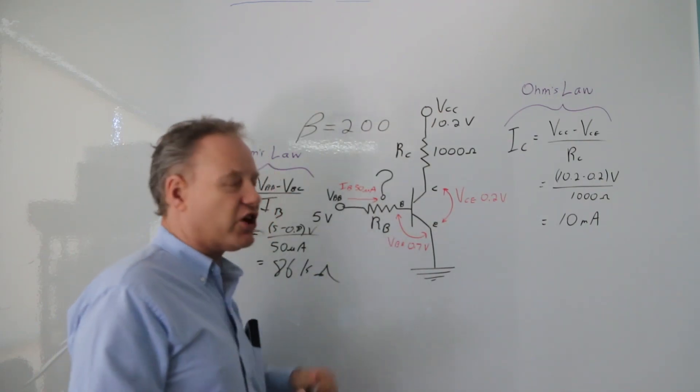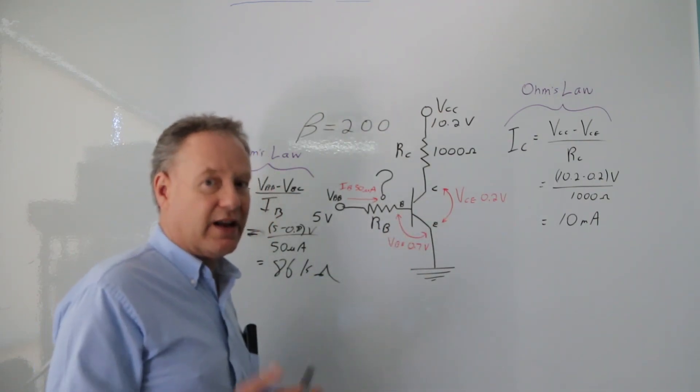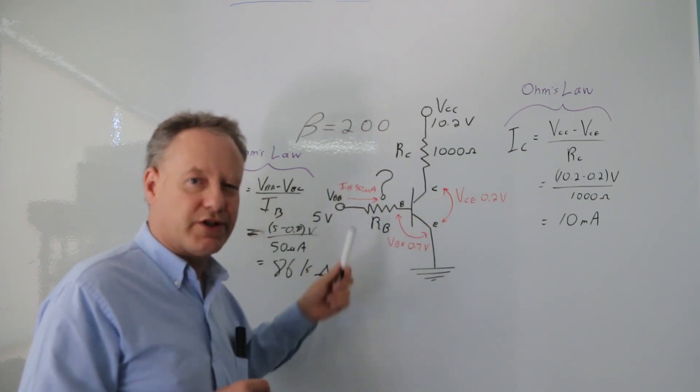So whatever resistor you have in your kit, you're going to throw there. You're going to get more than enough current than you need, and this is going to be fully saturated. That's how you choose your base resistor.